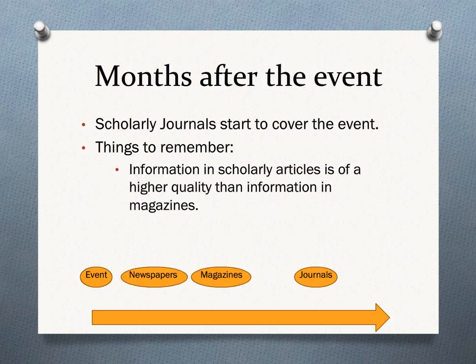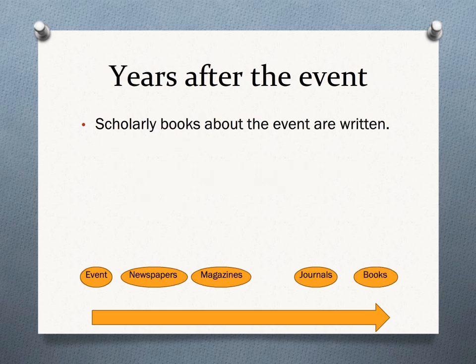Months after the event, scholarly journals start to cover it. Scholarly articles contain higher quality information about events than a popular magazine article does. Finally, years after the event, scholarly books are written.